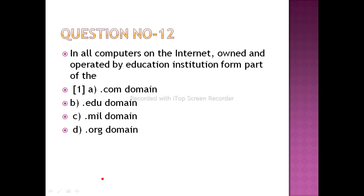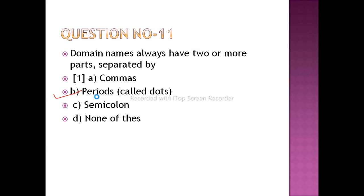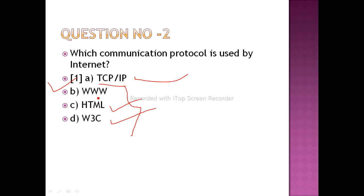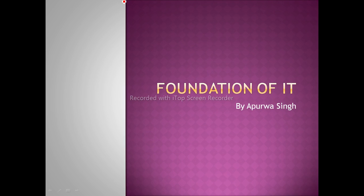All computers on the internet owned and operated by educational institutions form part of the dot-edu domain. Domains are of different types: dot-com for commercial, dot-edu for education, dot-mil for military, dot-org for organizations. The answer here is dot-edu for education. I hope you understand — thank you very much. In upcoming videos I will discuss more questions related to IT.